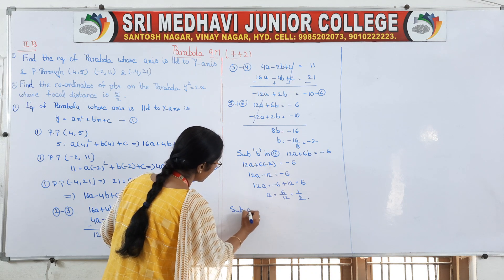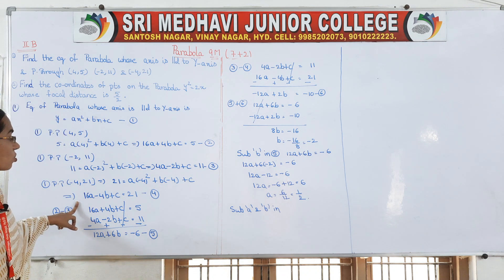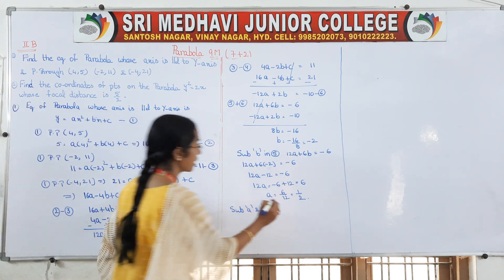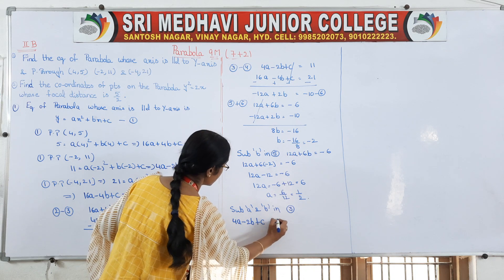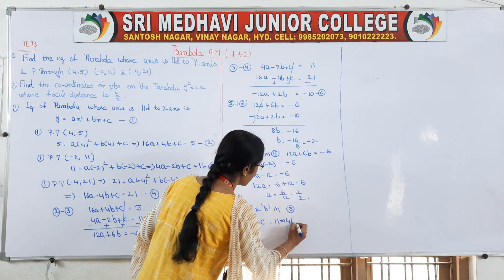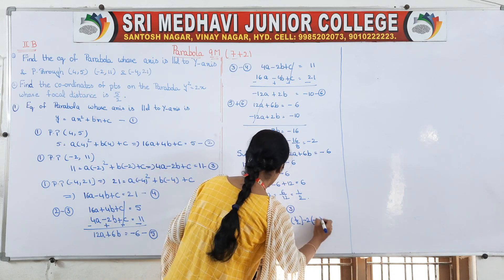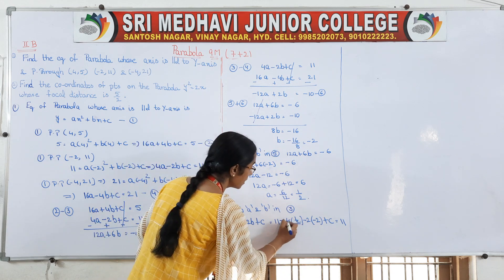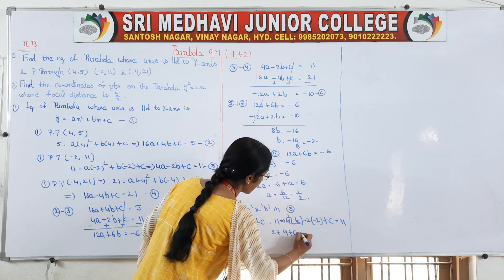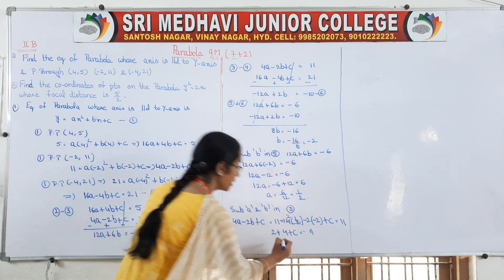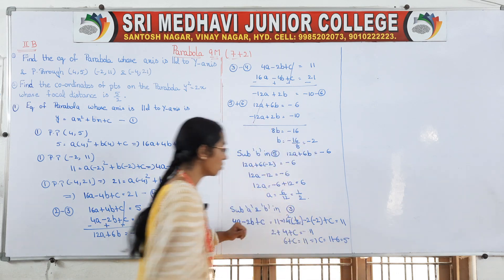Now substitute a and b into a simple equation to find c. Using the third equation: 4a - 2b + c = 11. Substituting a = 1/2 and b = -2: 4(1/2) - 2(-2) + c = 11, which gives 2 + 4 + c = 11, so 6 + c = 11, therefore c = 5.